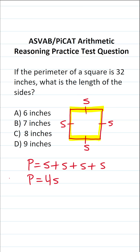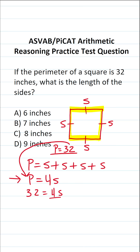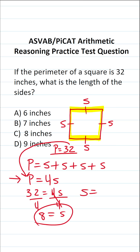This is the formula you need to know for the test, but I just showed you how you can derive it in case you forgot it on test day. To answer this question, we know that the perimeter is 32 inches according to the problem. So we can plug that in for P and solve for S. This becomes 32 equals 4S. If we divide both sides by 4, we'll get S by itself. 32 divided by 4 is 8, so the side length of this square is 8 inches. The answer is C.